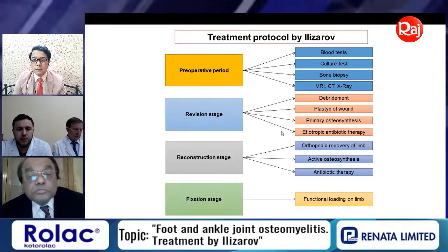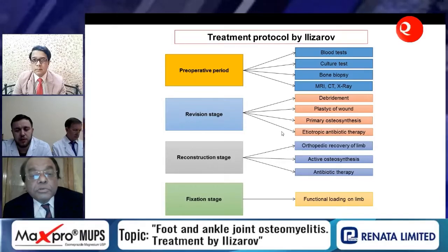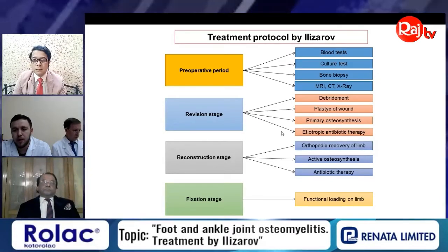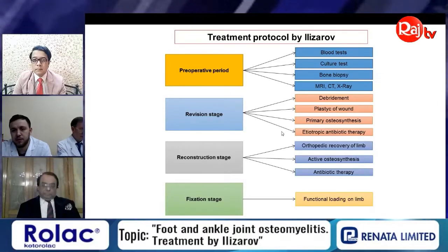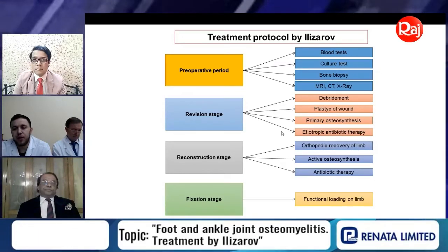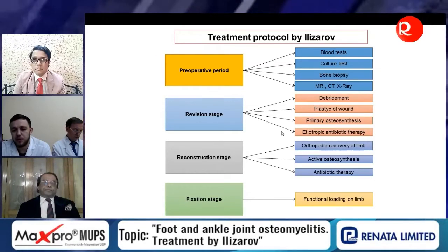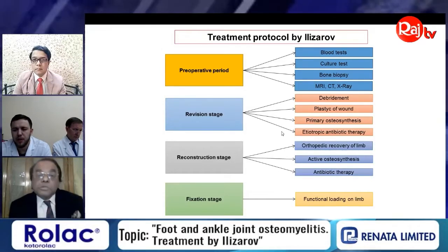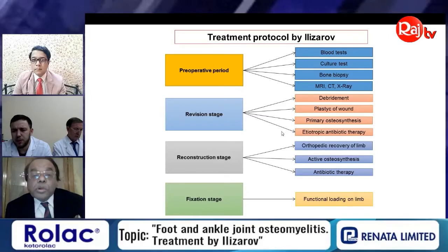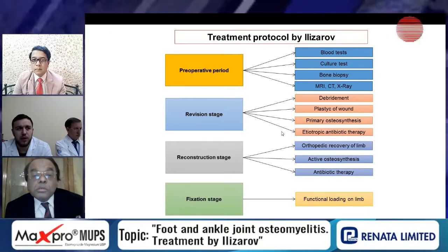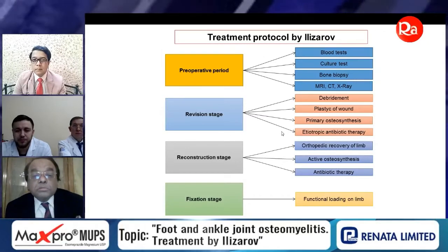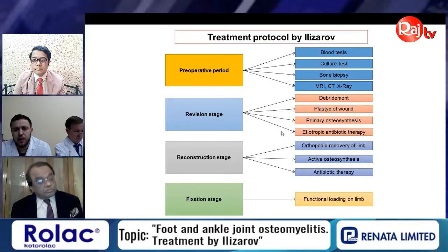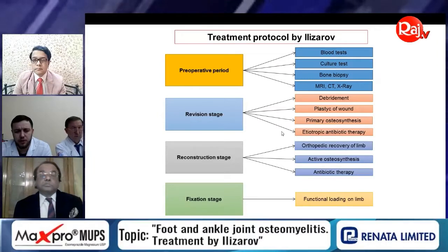The second stage is the revision stage, where we perform debridement, wound plasty if needed, primary osteosynthesis, and etiotropic antibiotic therapy — usually for 20 to 25 days. The next stage is the reconstruction stage, where we perform orthopedic recovery of the limb — deformity correction, healing of bone defects, and all relevant orthopedic surgery.